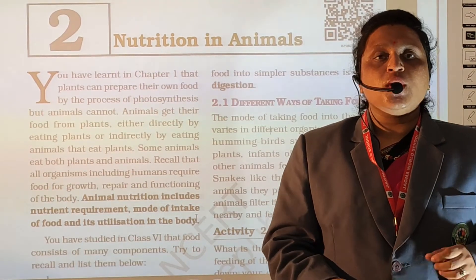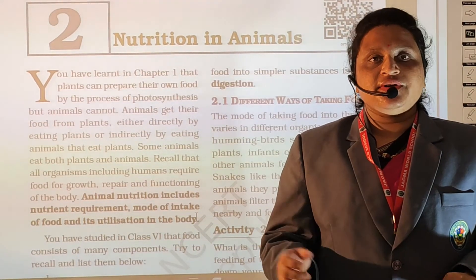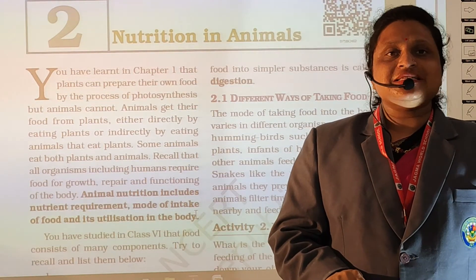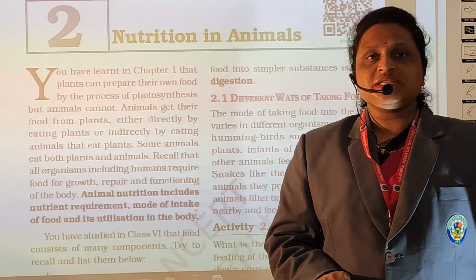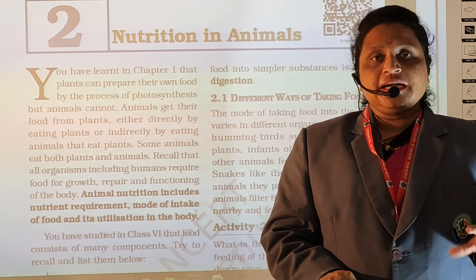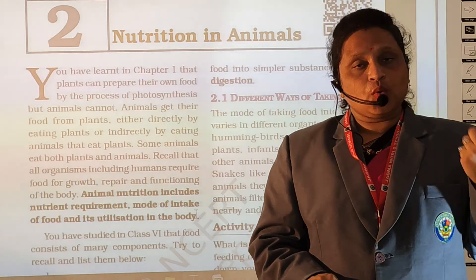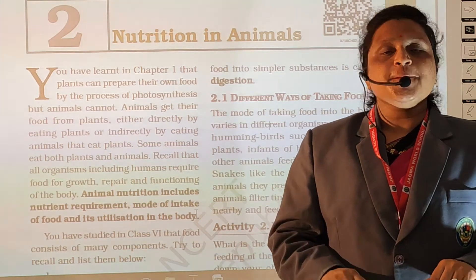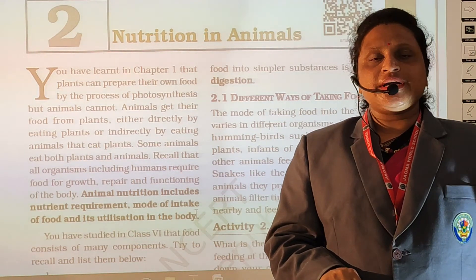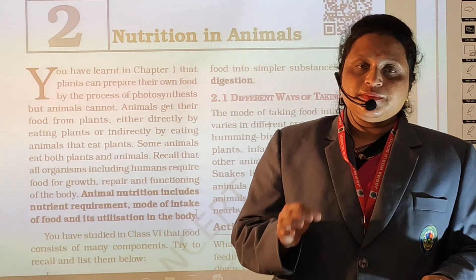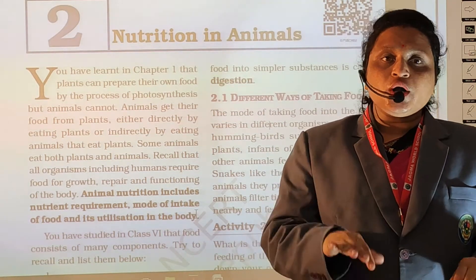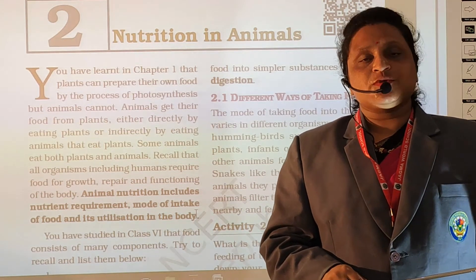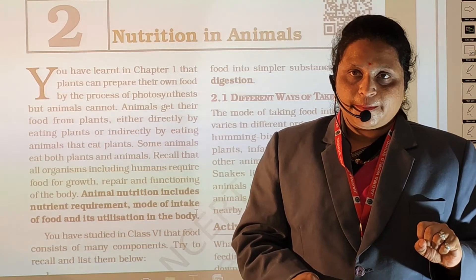In plants there are also two types: one is autotroph and another one is heterotroph. Autotroph means 'auto' means self — those plants make their own food by themselves. These are called autotrophic plants. Heterotroph means 'hetero' means other — those plants do not make their own food by themselves; they are dependent on other plants. These are called heterotrophic plants.